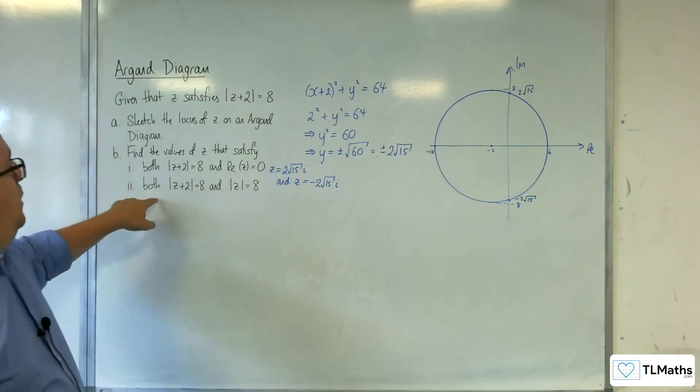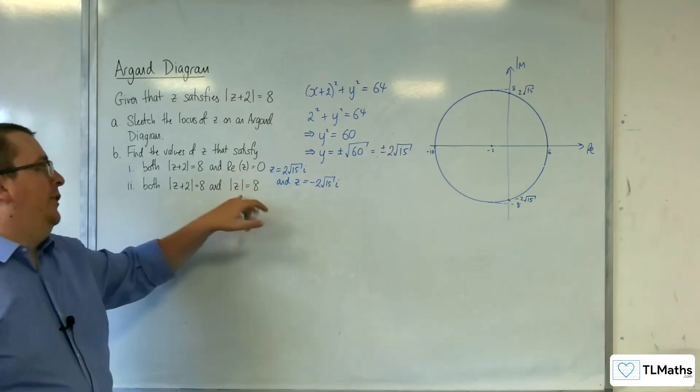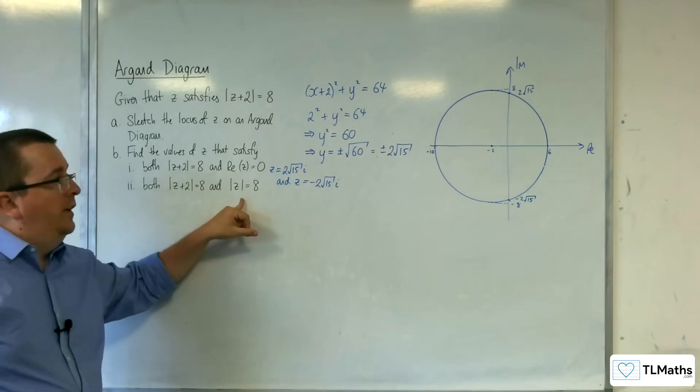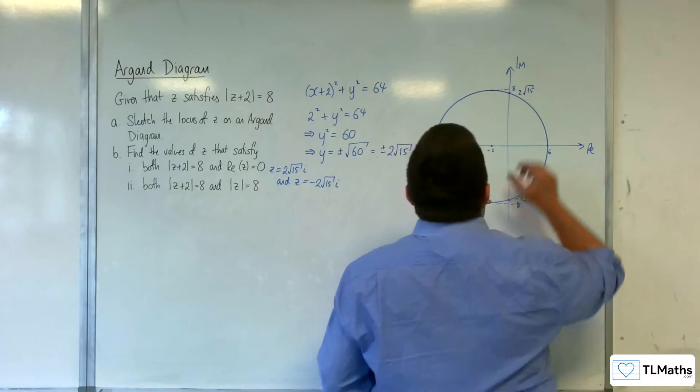OK. Now, for part 2, both the modulus of z plus 2 equals 8. So, on the circle. And we've got this other circle, mod z equals 8. So, this is the circle centred at the origin with radius 8.